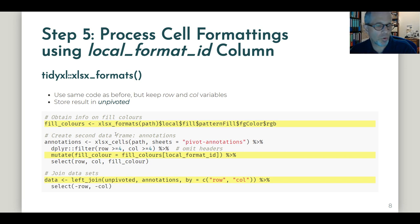Now the key idea is to create a second dataset. Here it's called annotations that just contains the row and column information plus the fill color.